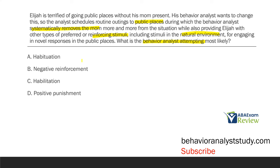What about B, negative reinforcement? We know the analyst is using reinforcing stimuli, including stimuli in the natural environment, but we're not quite sure if it's negative or positive reinforcement. So B, we're unclear on — we're not quite sure what type of reinforcement. What about C, habilitation?